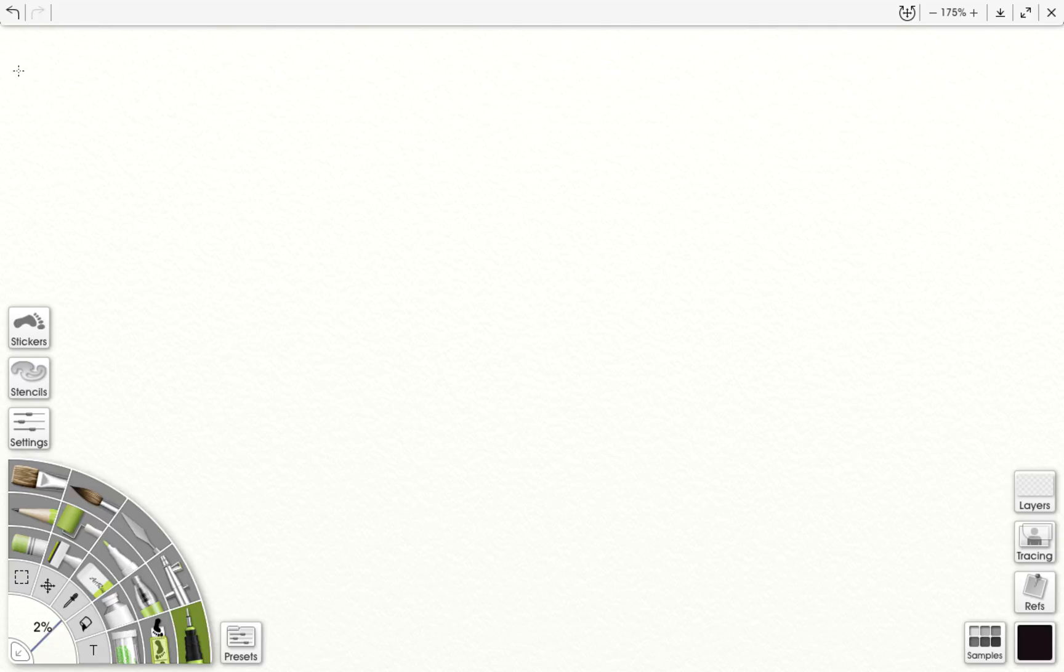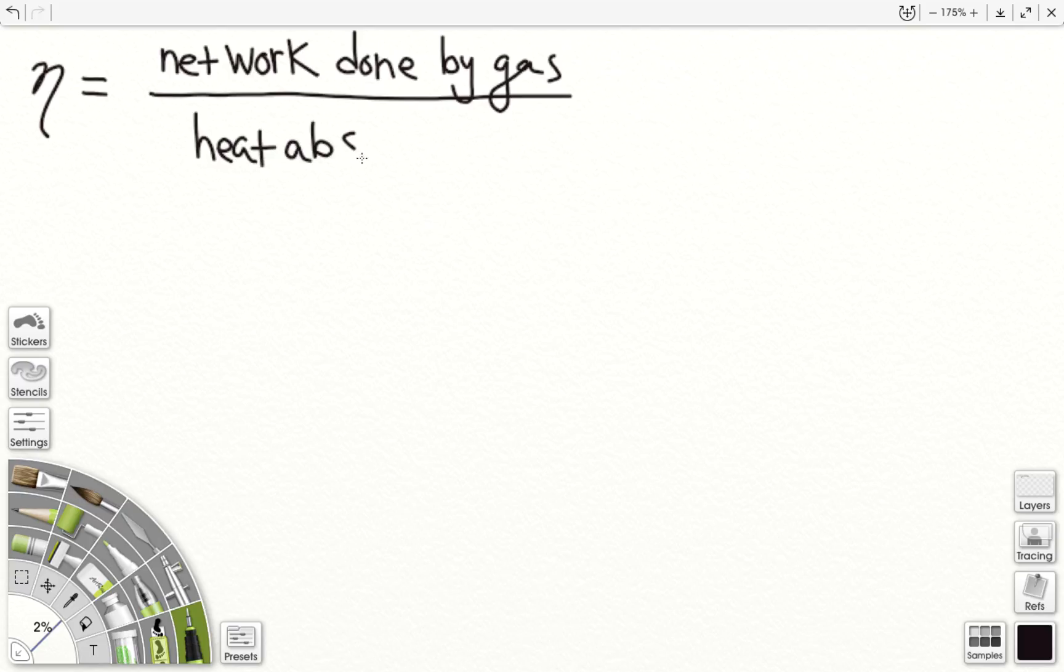So in the last video, I had left off with an expression for the efficiency of a cycle. We had said that the efficiency of a cycle is net work done by gas in the cycle over the heat absorbed by gas. So it's kind of like we put some heat into our system, and we've been calling this Qin.